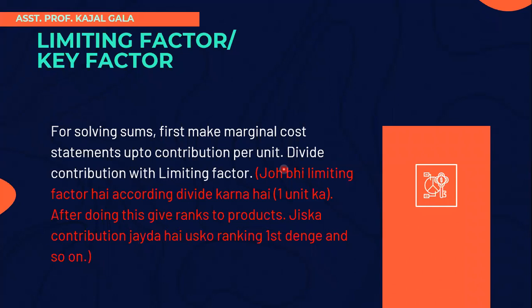After dividing, we get contribution per unit divided by the limiting factor. Say for example, if the limiting factor is raw material, the value will be given in the question. If you have three products A, B, and C, you divide contribution per unit by the limiting factor and then give rankings — first, second, third, fourth rank — based on which product has the highest contribution per limiting factor unit.